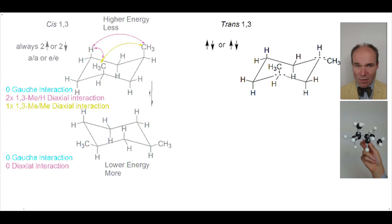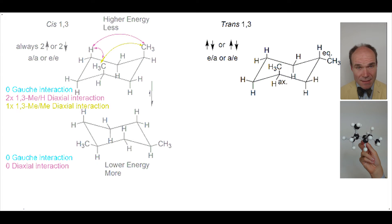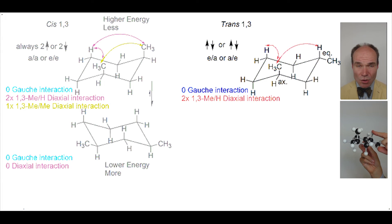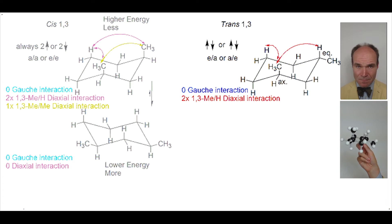In this chair conformation, one of the methyl groups is equatorial and the other is axial. When we look for steric strain, we find no gauche interactions, but there are two 1,3-diaxial interactions between a methyl group and a hydrogen.